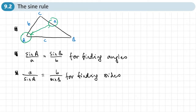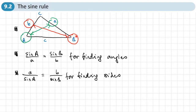We'll know to use the Sine Rule when we have a side and its opposite angle together as a pair — for example, this angle and this side as one pair, and this side and this angle as another pair. One value from those two pairs will be missing, so look for these opposite side-angle pairings.